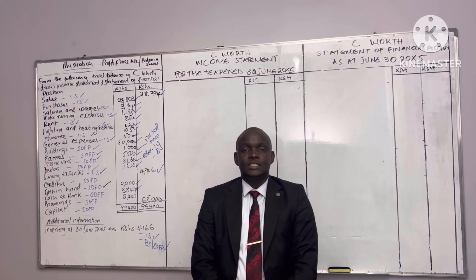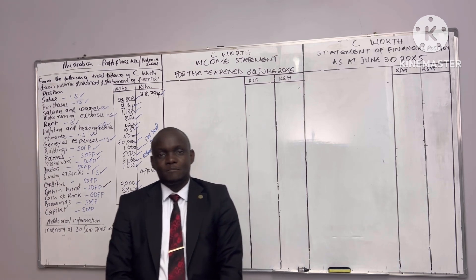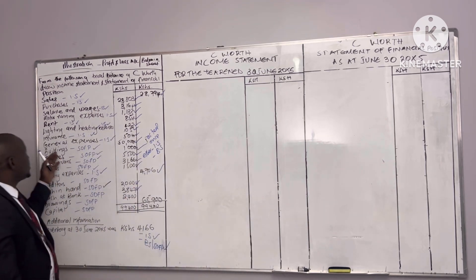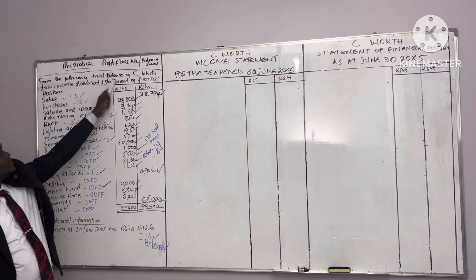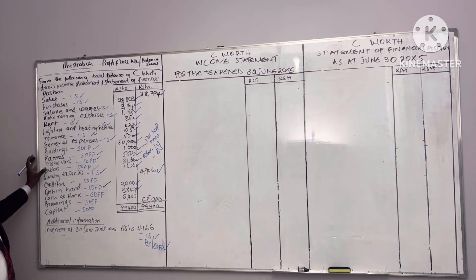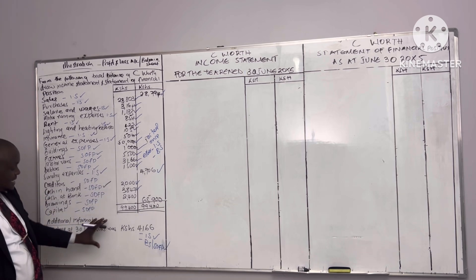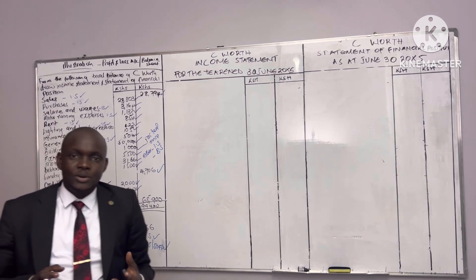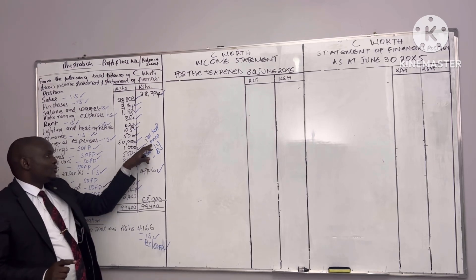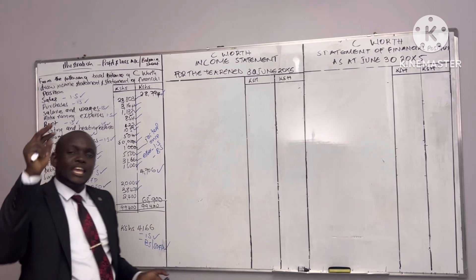Hello guys, welcome to today's class. Today we are going to look at another example on statement of financial position and income statement — these were formerly called trading profit and loss account, and balance sheet. Any item in the trial balance is posted once, either in the income statement or in the balance sheet. Any information in the additional information is posted twice, in both.